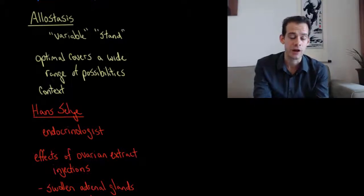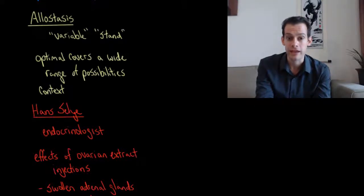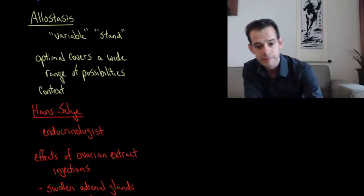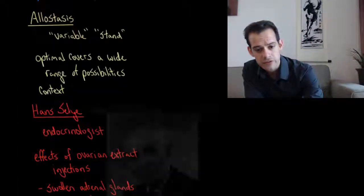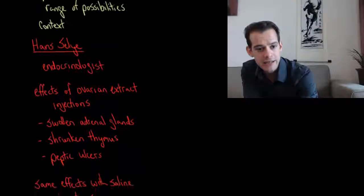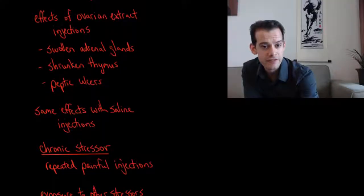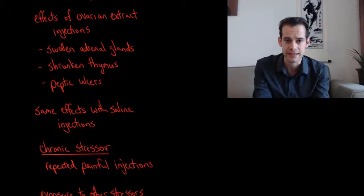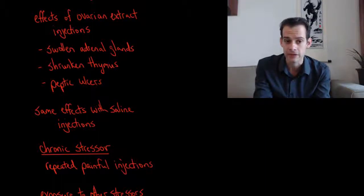Now we're going to turn to the work of Hans Selye, who is a Hungarian endocrinologist who spent most of his career in Canada. And here's a picture of Selye here. And Selye was studying the effects of an ovarian extract on rats. And so what he did was repeatedly inject the rats with this extract.